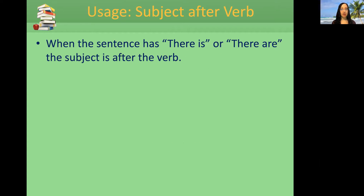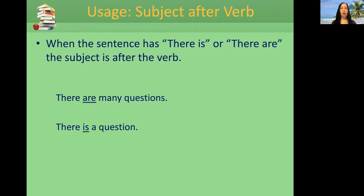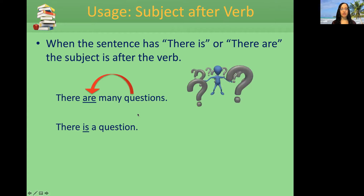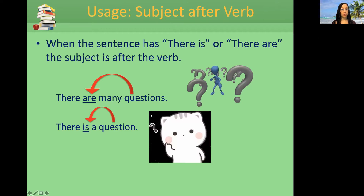When the sentence has 'there is' or 'there are,' the subject comes after the verb. 'There are many questions.' 'There is a question.' The subject here is 'questions' — and here it's 'question.' 'There are many questions' — 'there is a question.'